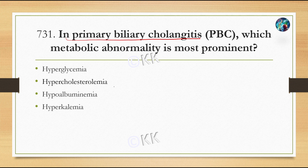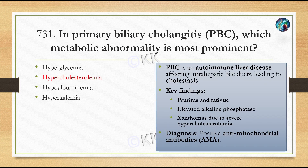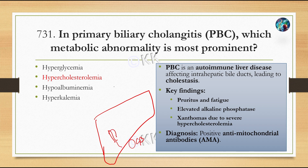Primary biliary cholangitis is an autoimmune liver disease that affects intrahepatic bile ducts leading to cholestasis. It causes cholestasis with swelling of the intrahepatic bile ducts, and symptoms include pruritus and fatigue. On testing, we see elevated alkaline phosphatase levels.